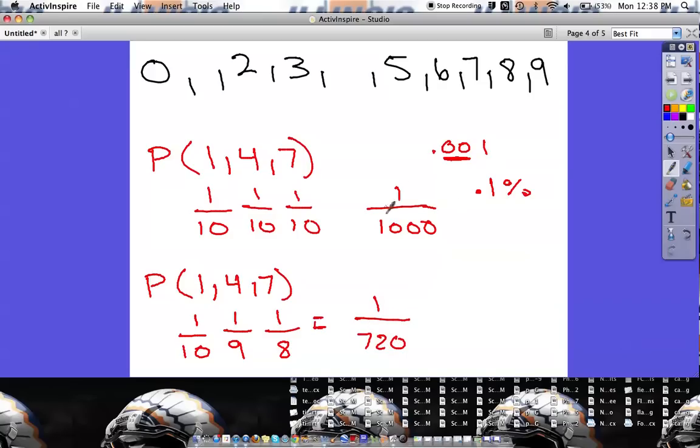So if you look at this, my chances are quite a bit better. One out of a thousand is a lot worse of a chance than one out of 720. So my chances would be a lot better of guessing your combination if you couldn't have the same number twice, as opposed to if you possibly could have the same number twice.